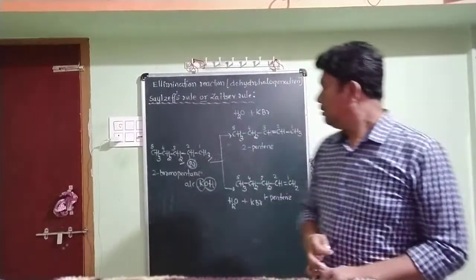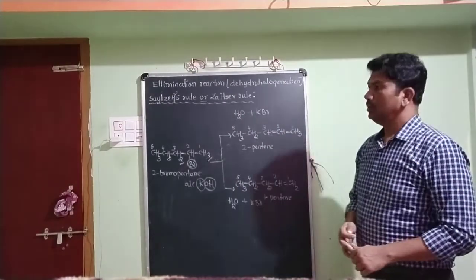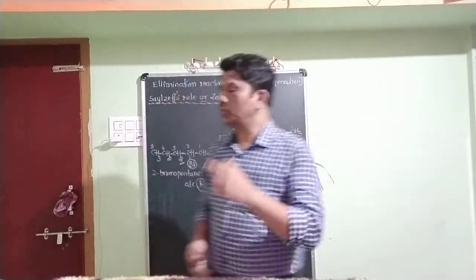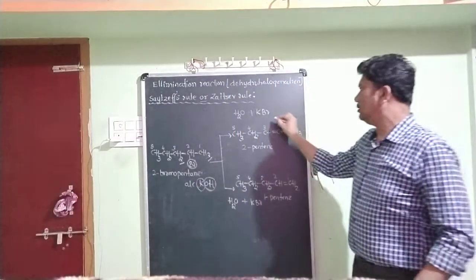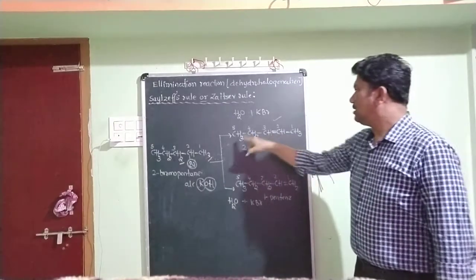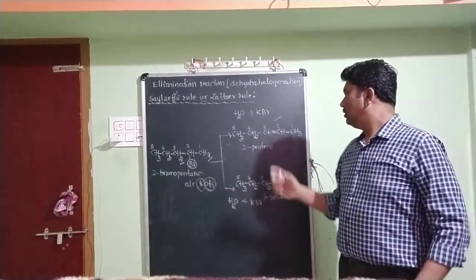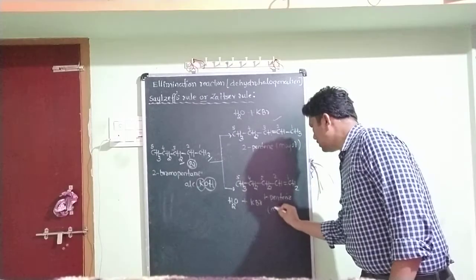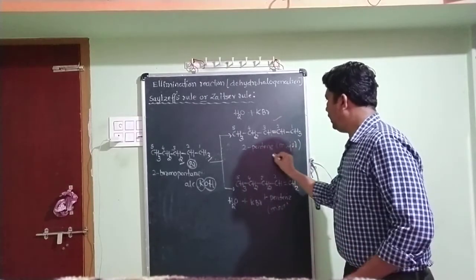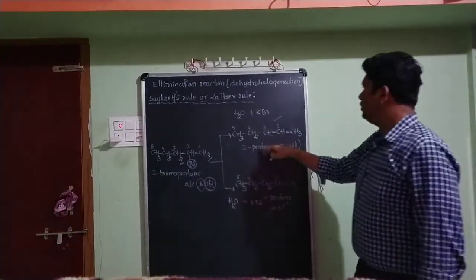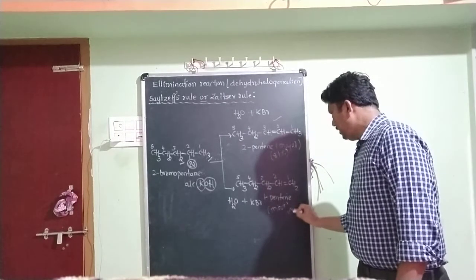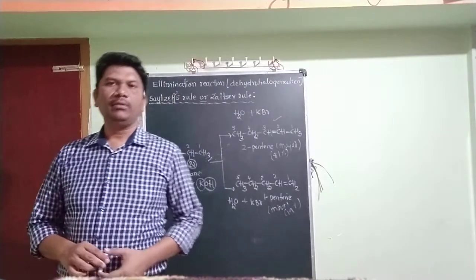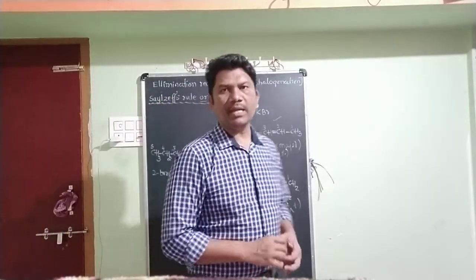Both 2-pentene and 1-pentene are alkenes. According to Saytzeff's rule, when a haloalkene yields more than one alkene, the major alkene is the highly substituted one. Across the double bond of 2-pentene, the chain on the left and right is longer, making it more substituted. Therefore 2-pentene is the major product at 81%, and 1-pentene is the minor product at 19%.